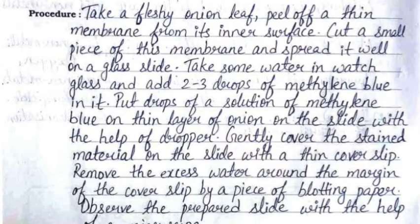Put drops of the methylene blue solution on the thin layer of onion on the slide with the help of a dropper. Gently cover the stained material on the slide with a thin cover slip. Remove the excess water around the margin of the cover slip using a piece of blotting paper.